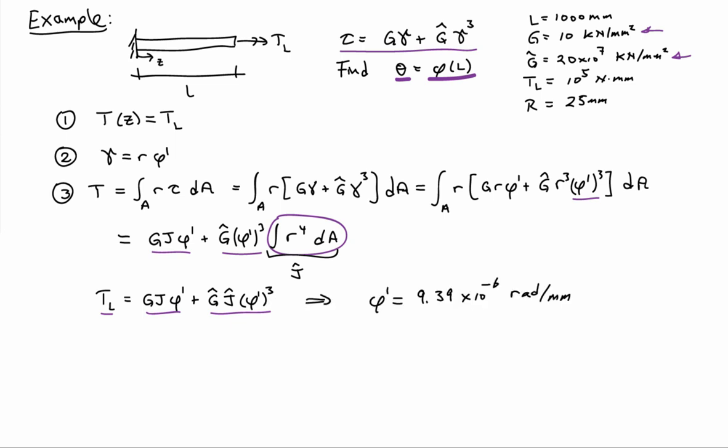So I went ahead and did that with MATLAB. And I found out that phi prime is equal to 9.39 times 10 to the minus 6 radians per millimeter. So that gives me the twist rate in the system.